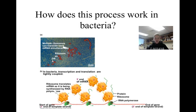The orange globs are ribosomes, and they translate the mRNA as it is being synthesized by the RNA polymerase. It is common to have a few ribosomes translating any one piece of mRNA. This is a very efficient way for the cell to crank out lots of proteins in a short time. The top picture shows an electron micrograph of this process, where you can see ribosomes in very close proximity to the DNA, actually translating the mRNA transcript as it is produced.